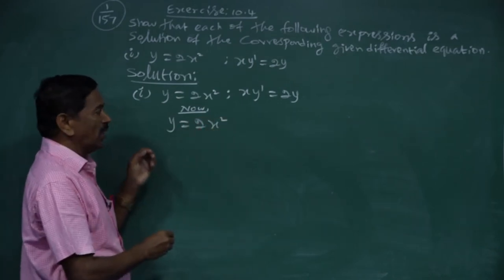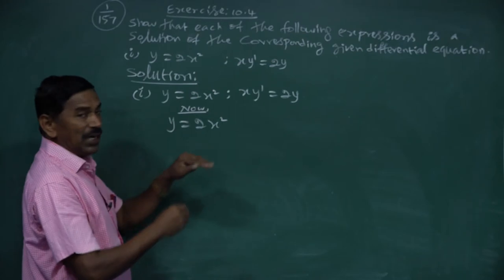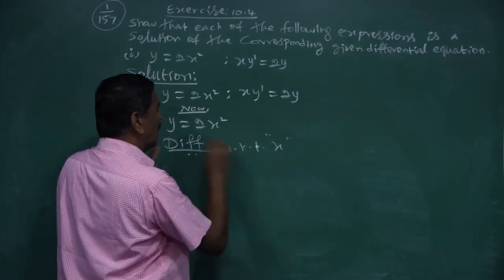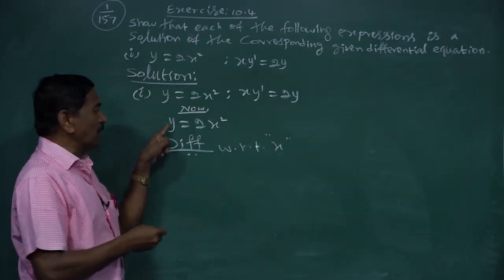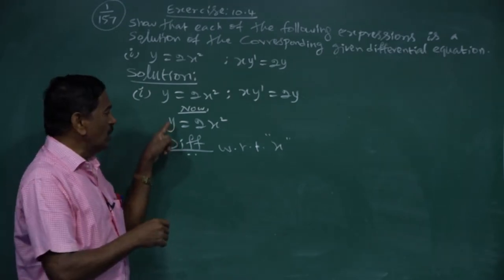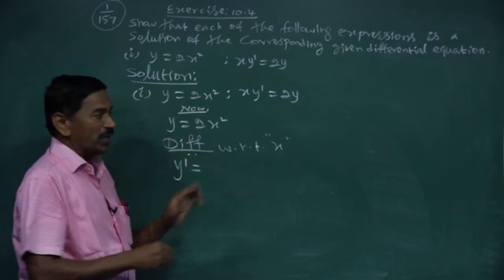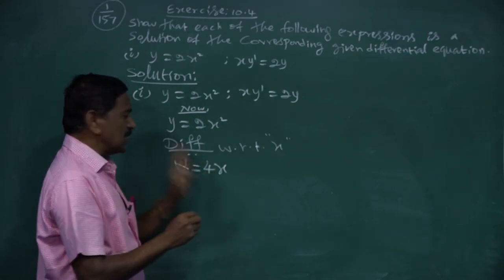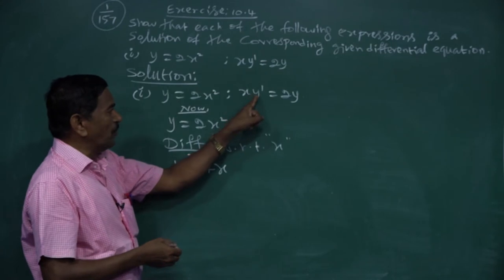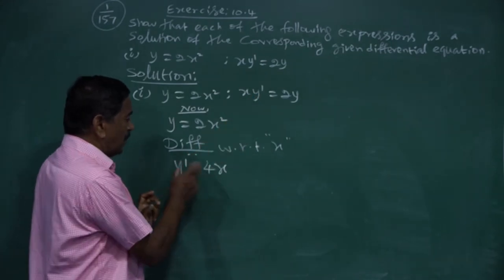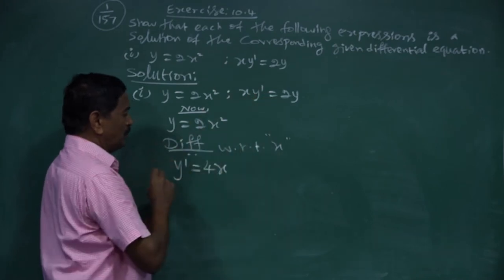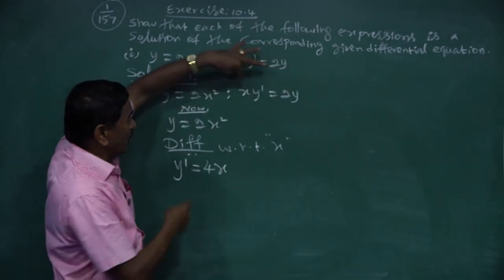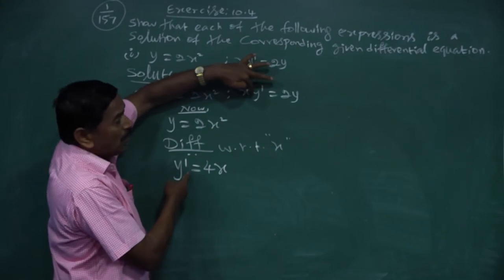y = 2x². Differentiating with respect to x, the differential of y is y'. The differential of 2x² is 4x. So y' = 4x. But this available answer y' = 4x is not equal to the required answer x·y' = 2y. So we have to adjust.